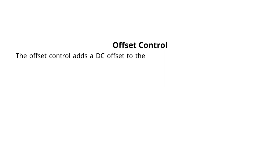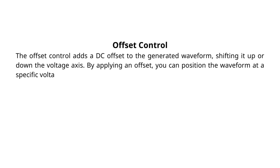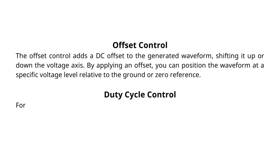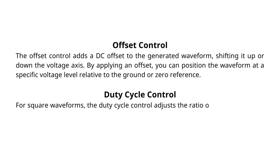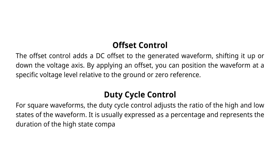Offset control: the offset control adds a DC offset to the generated waveform, shifting it up or down the voltage axis. By applying an offset, you can position the waveform at a specific voltage level relative to ground or zero reference. Duty cycle control: for square waveforms, the duty cycle control adjusts the ratio of the high and low states of the waveform. It is usually expressed as a percentage and represents the duration of the high state compared to the total period of the waveform.